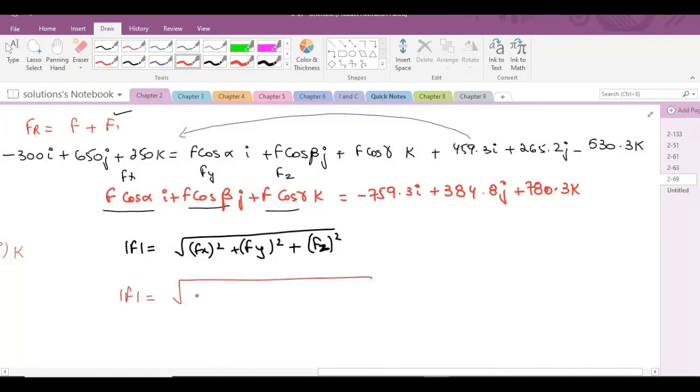When you substitute the values, it would be 759.3 squared plus 384.8 squared plus 780.3 squared. So when you solve it and simplify it, it becomes 1154.76 Newtons. So this is our first answer.